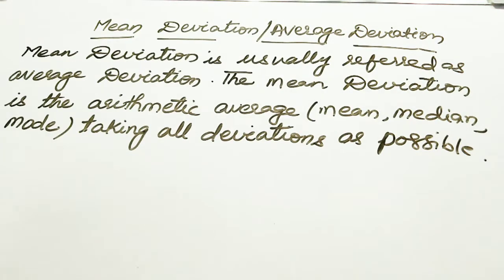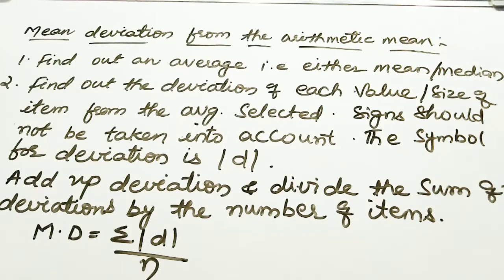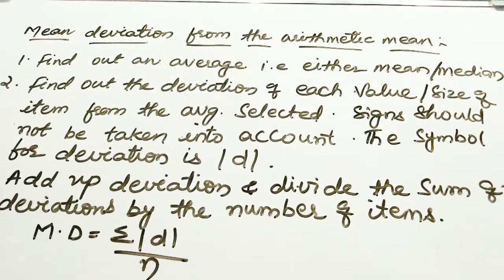How to calculate average deviation using the mean method? What are the steps to find mean deviation using your arithmetic mean? First, you should find out an average. Whatever values are given, you first have to find out the average using your mean method or median method. After finding the average, you have to find out the deviation of each value from the average selected.